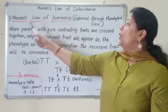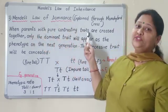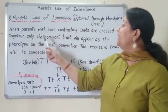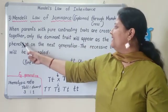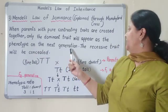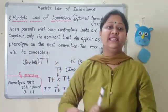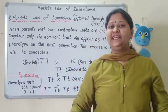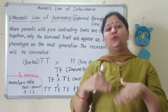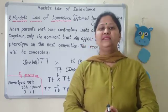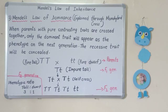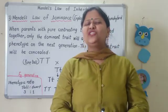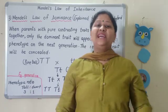To repeat Mendel's law of dominance: when parents with pure contrasting traits are crossed together, only the dominant trait will appear as the phenotype — the physical appearance visible from outside — in the F1 generation, and the recessive trait will be concealed. In F1, only the dominant character expresses itself. This is Mendel's law of dominance. Please take a screenshot of this. Do not forget to like, share, and subscribe to my YouTube channel — Learning Science with Chetna.